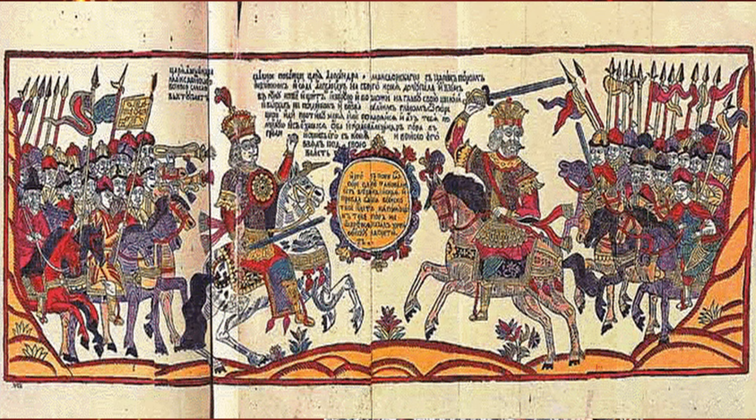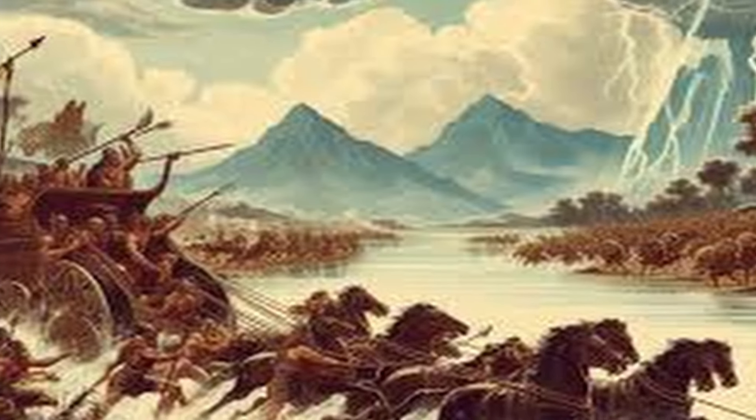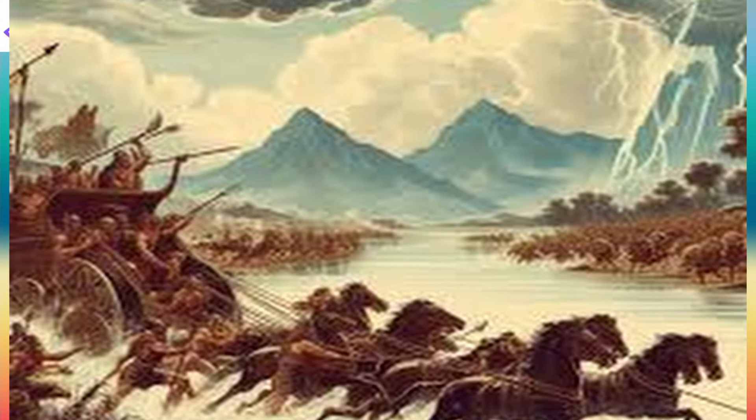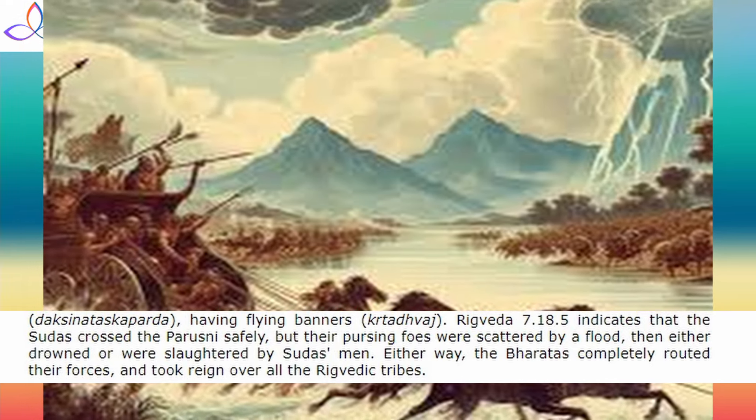They all came together under the leadership of Rishi Vishwamitra. On the other side was the Bharata king Sudas of the Tritsu family, who fought under the guidance of Rishi Vasishtha. The Tritsu homeland came to be known as Brahmavarta, the region between the Saraswati and Yamuna rivers. According to Rig Veda Mandala 7, verse 18, Sudas crossed the Parishani safely, but the enemy force was scattered by a flood, and they either drowned or were killed by the Bharata troops.